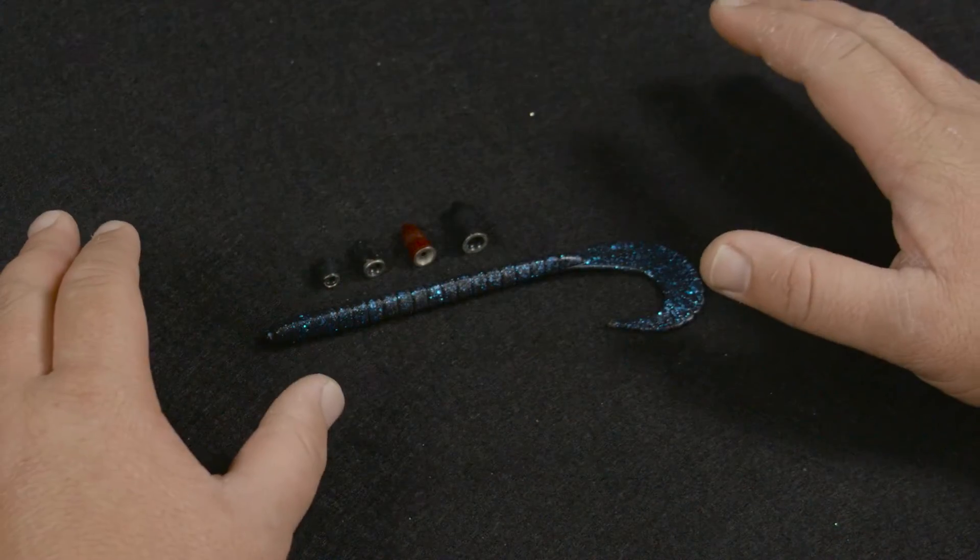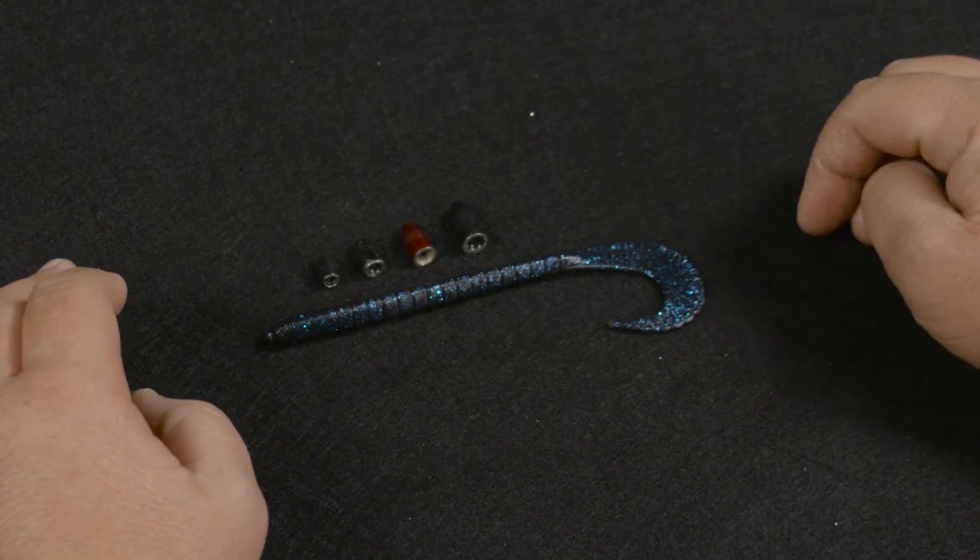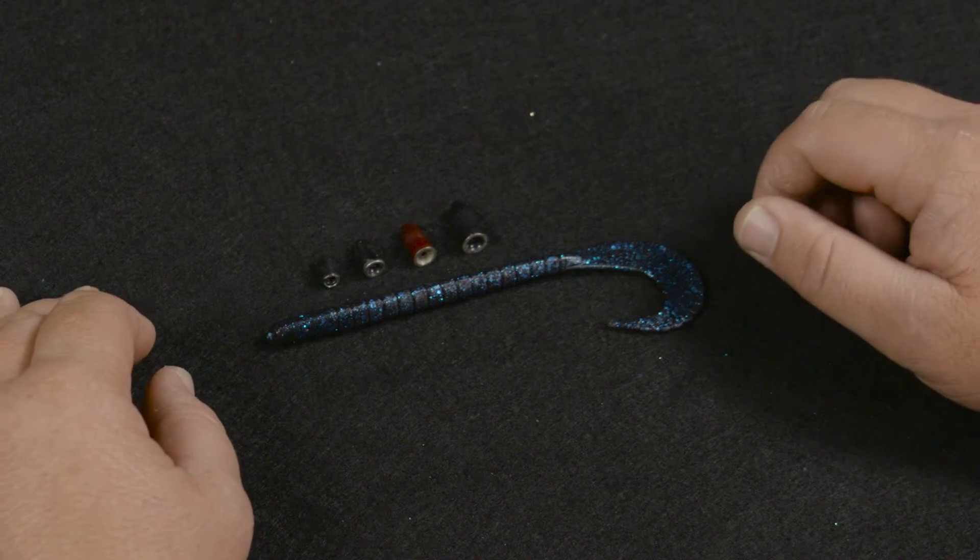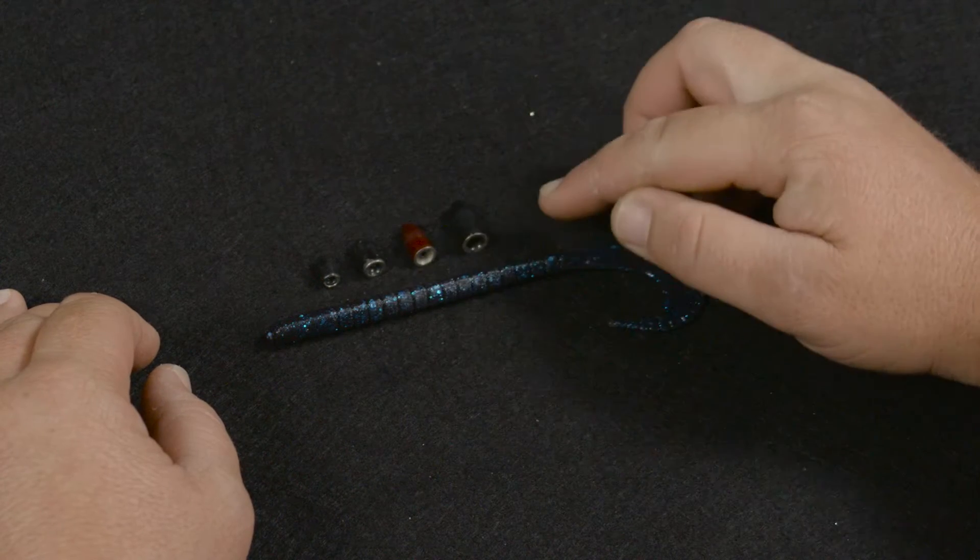When I'm fishing with a ribbon tail worm, Texas Rigged, I have four different weights that I use to cover all the different conditions. I either use green pumpkin, red, or black.